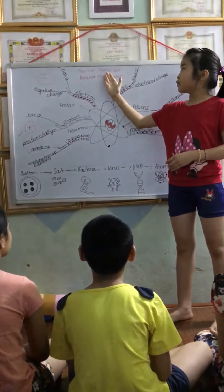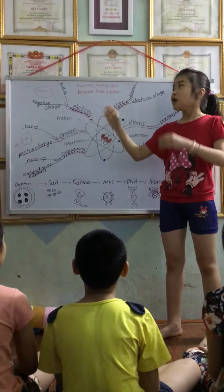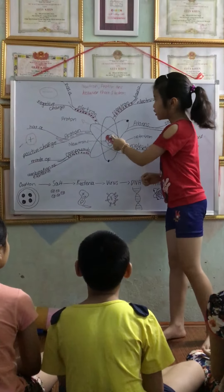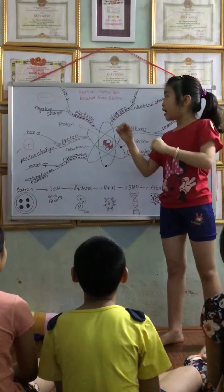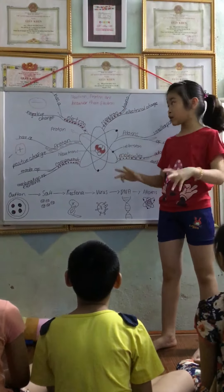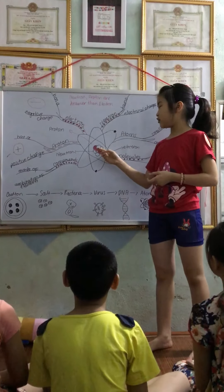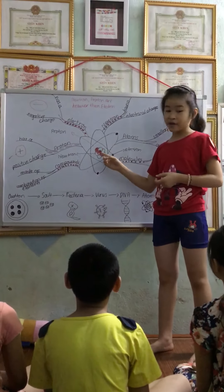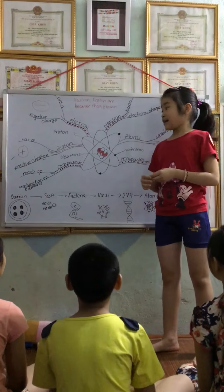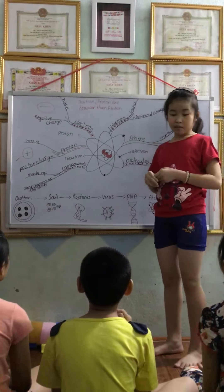Neutron and proton are heavier than electron. So, neutron here, proton over here — and each of them is much heavier than the electron. And you can see here it is bigger. So, that is the thing I want you to remember.